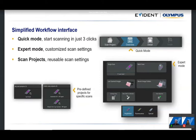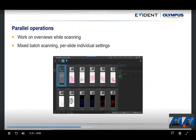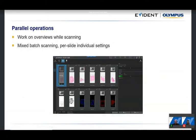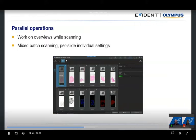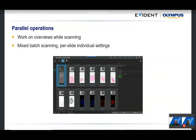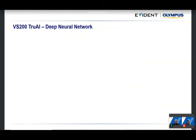The system supports parallel operation: once overviews are acquired you can start defining what to scan while the system continues acquiring other overviews. Mixed batch scanning is also supported — in the autoloader you can have slides of different sizes, each assigned a completely different acquisition protocol. Once defined, you press start scan and the system automatically produces all the scans you need.